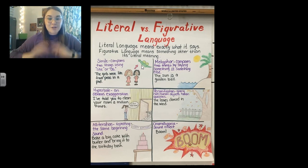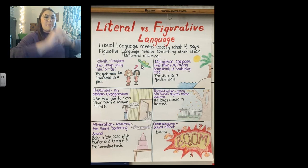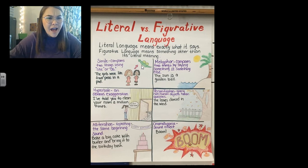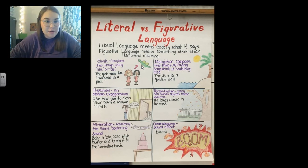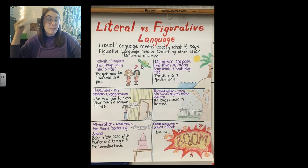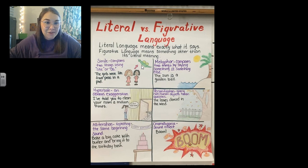There's also personification. Personification is giving non-human objects human qualities. So, the leaves danced in the wind. Did the leaves actually get up and do a jig? No. The leaves were just flowing all around, all over the place — it looks like they were dancing. Again, figurative language is just giving you something to picture in your brain. It is not literal. It's not exactly what it's saying.